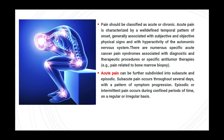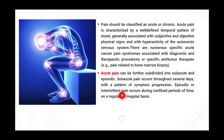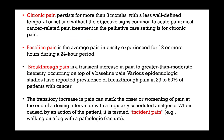Acute pain is further subdivided into two groups. The first is acute pain occurring over several days with a pattern of symptom progression, which is called sub-acute pain. The other type is episodic pain, which is intermittent in nature and occurs during confined periods of time on a regular or irregular basis. Chronic pain persists for more than three months, with a less well-defined temporal onset and without the objective signs common to acute pain.